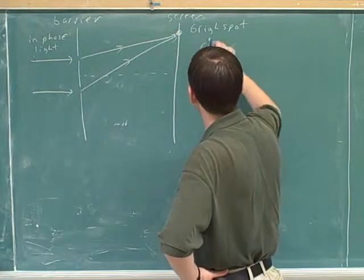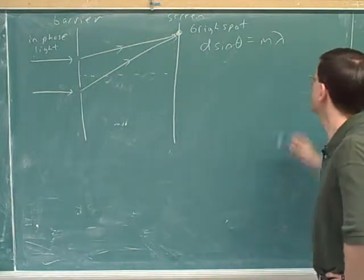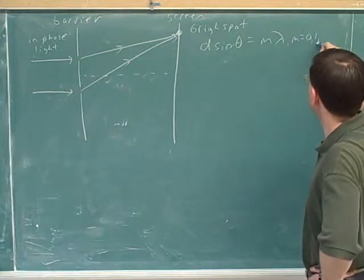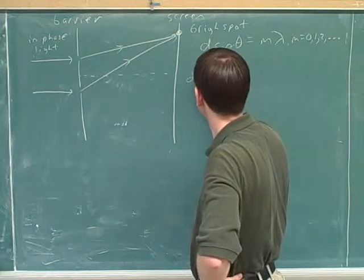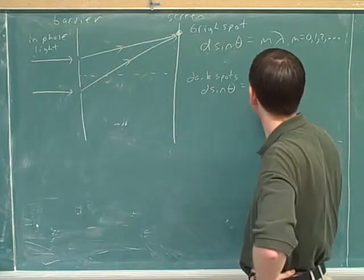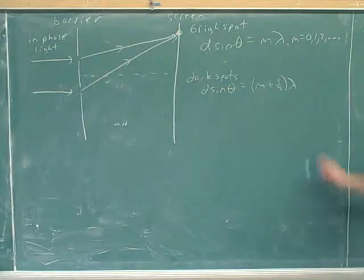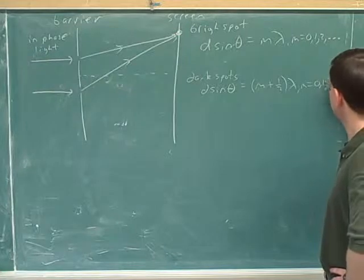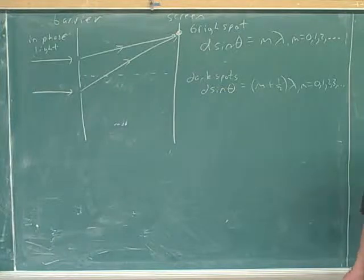So the bright spots occur when D sine theta is equal to M lambda, and the dark spots occur when D sine theta equals M plus one-half lambda. And this is a case where M could be zero in both equations.